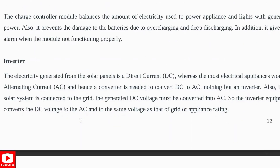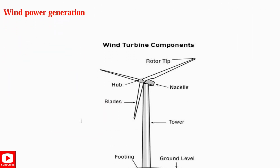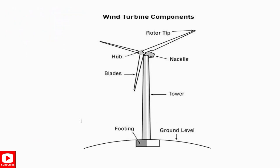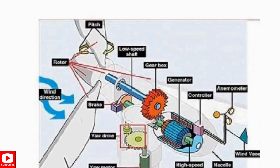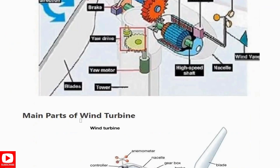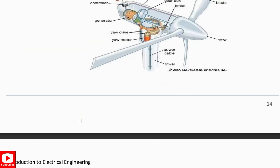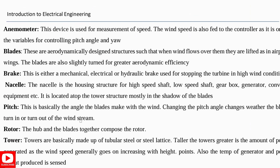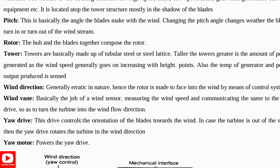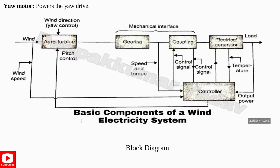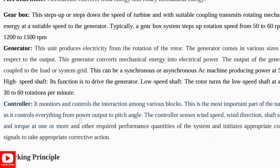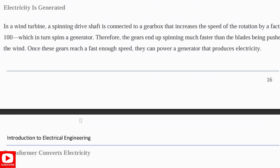Then comes wind power energy. The wind turbine components include the hub, blades, rotating table, and ground-level parts. For internal components, refer to the notes for understanding. The main blocks are: aero turbine, gearing and coupling, electric generator, and controllers — explain how they are connected and how signals are passed. Write the working principle: how wind pushes the blades, how electricity is generated, and how a transformer converts and stores the electricity.